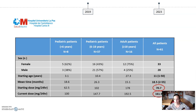Pediatric patients' starting dose was between 50 and 100 milligrams, while adult patients started between 150 and 200 milligrams. Over the follow-up, the dose has been slightly increased.